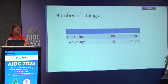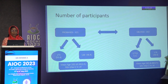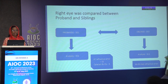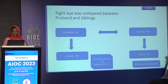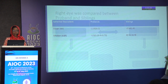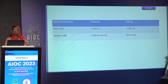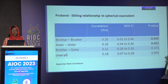There were 289 probands with one sibling and 32 probands with two or more siblings, totaling 321 probands and 353 siblings, with females in the majority. For analysis, only 301 patients could be included as 15 had normal right eye refractive status with refractive error only in the left eye. Mean spherical equivalent among probands was -2 diopters and among siblings was -0.5 diopters. The correlation of spherical equivalent between proband and sibling showed an overall positive correlation which was statistically significant.